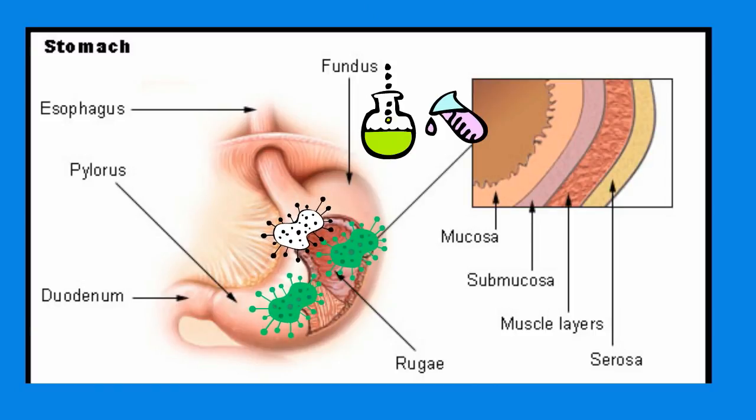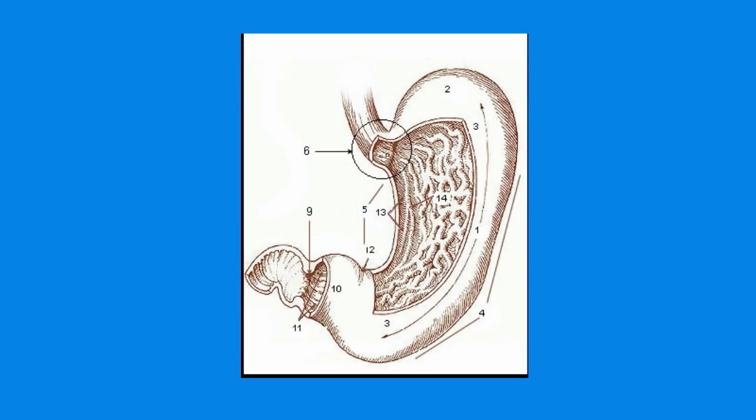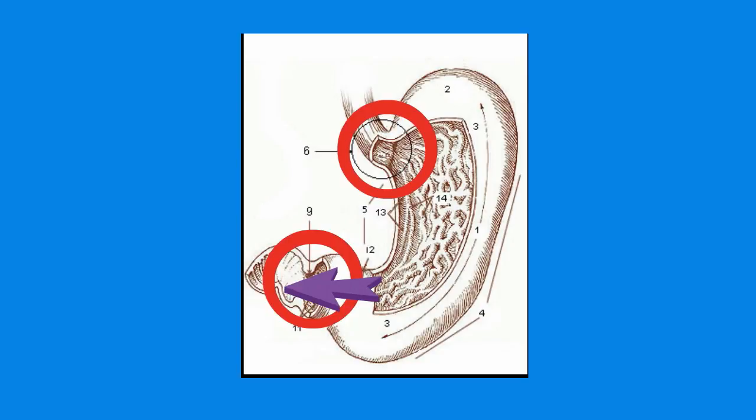The stomach also contains mucus that protects the lining of the stomach from the acid. Food enters and exits the stomach through valves called sphincters. Food passes into the stomach through the cardiac sphincter and exits through the pyloric sphincter.